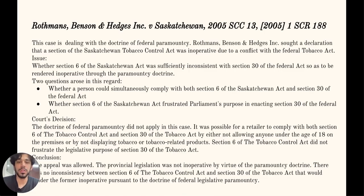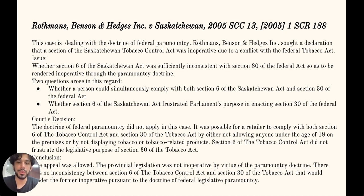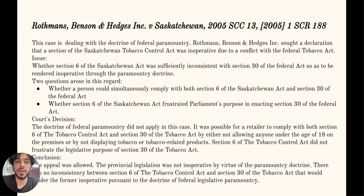Let's get to the case laws. Rothman, Benson and Hedges versus Saskatchewan is a Supreme Court case in which the Supreme Court of Canada dealt with the doctrine of federal paramountcy. The case involved a tobacco company that challenged a section of Saskatchewan's Tobacco Control Act, which banned advertising and display of tobacco-related products on premises where persons under 18 years were permitted. The company argued that this section was inconsistent with a section of the Federal Tobacco Act, which allows retailers to display tobacco and signs indicating the availability and price of tobacco.